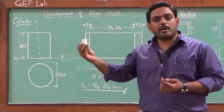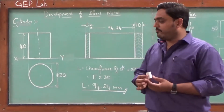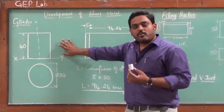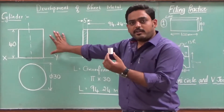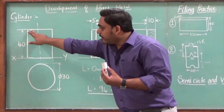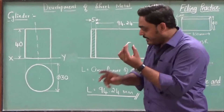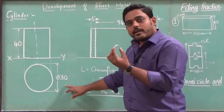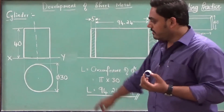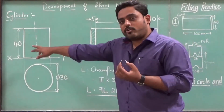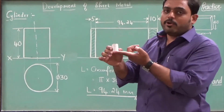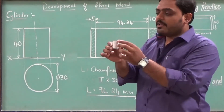To start with the development, I will first write the orthogonal views — the front and top view of this cylinder. A cylinder in the front view looks like a rectangle. I will write an XY line and draw the front view as a rectangle having a height of 40 mm. The width depends on the diameter of the circle seen in the top view, which is 30 mm diameter as given. We are only going to develop this lateral surface.